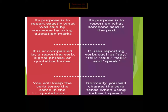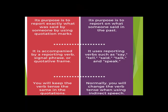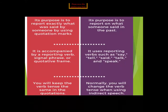Indirect speech is accompanied by a reporting verb, signal phrase, or quotative frame. In direct narration, the reporting verb is added before the reported speech. The signal phrase uses kinds of phrases to refer to the mood the speaker was in. Quotative frame means we use inverted commas to show exact words.